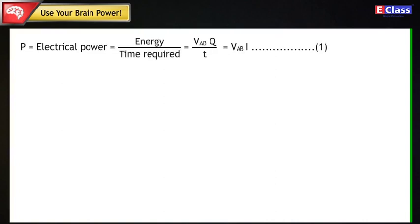P = electrical power = energy/time required = VAB×Q/T = VAB×I (Statement 1). Whereas Q/T = I.